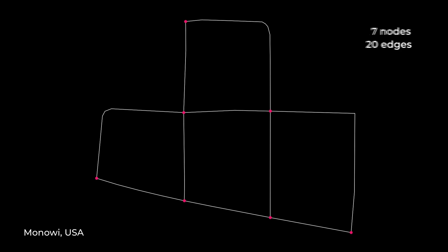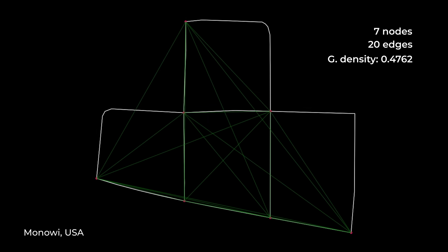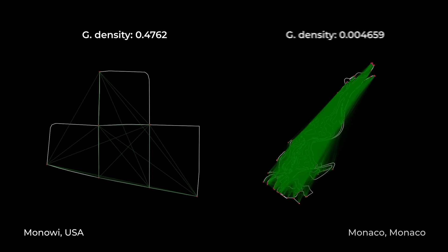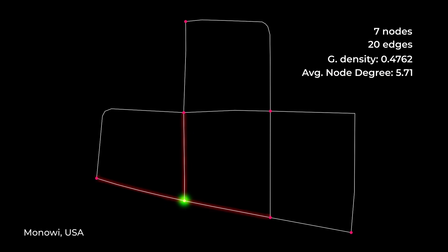We can also calculate two more quantities. The graph density, which is defined as the ratio of actual connections to possible connections. For Monowee, the density is 0.4762, meaning about 48% of all possible connections between the nodes actually exist. This number will be significantly smaller for bigger cities. Finally, the average node degree — the average number of connections per node. For Monowee it's 5.71, meaning each node is involved in nearly six connections, or connected to three other nodes if we don't specify direction.